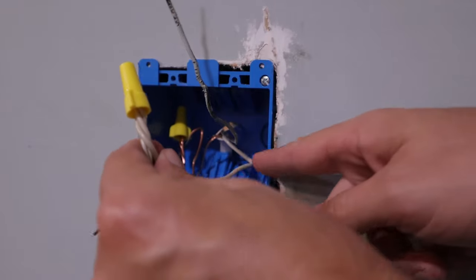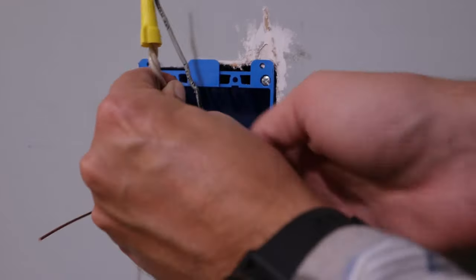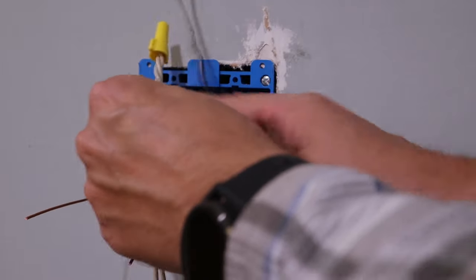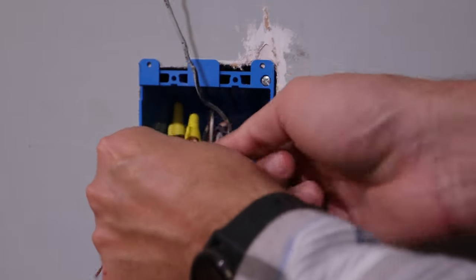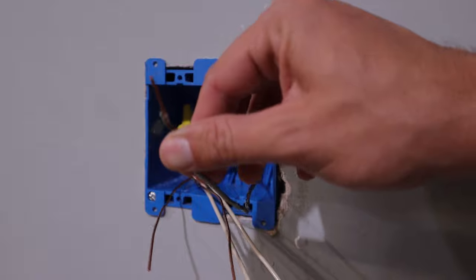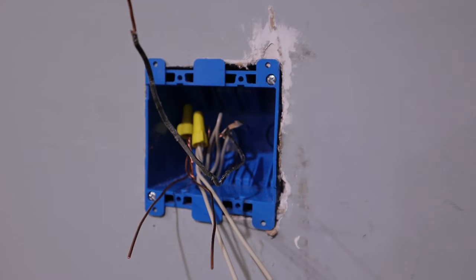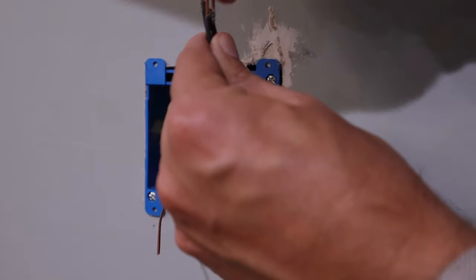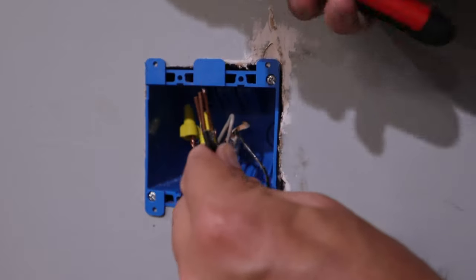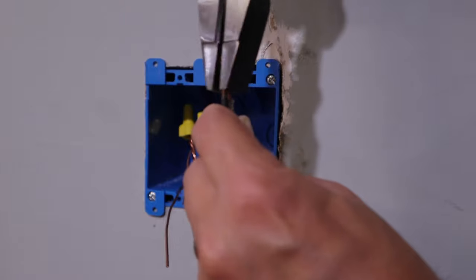Once we've got all of our white neutral wires together, then you can also put that wire nut and the excess wire in the back of the box. So now all that I've got left is my black hot wire here, and I'm going to do the same thing that I've done with the neutral wires and the ground wires. I'm going to put them all together and then get them started twisting together.